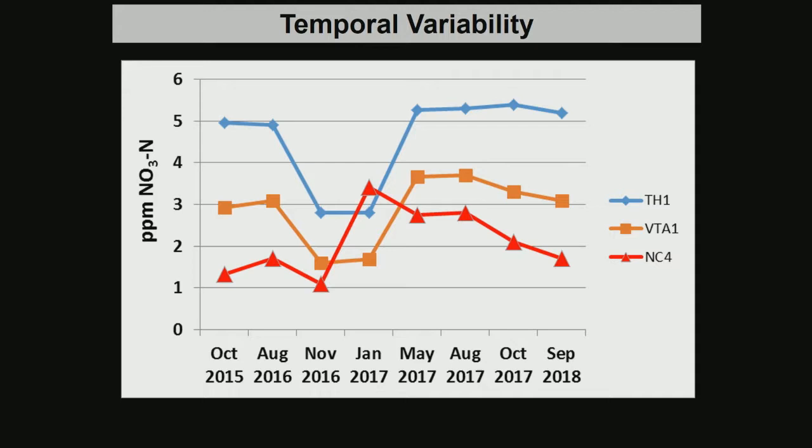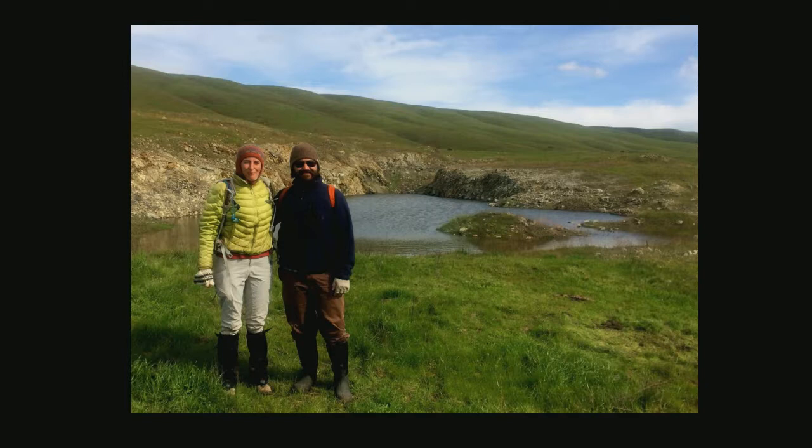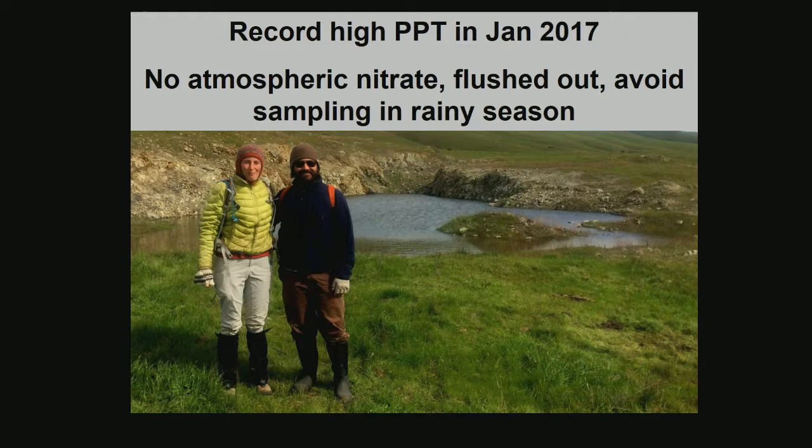After a very wet month, an old mine pit filled up with water — there's a lot of water in the groundwater system and we know exactly where the water table is. We found there was no atmospheric nitrate in this; it had been flushed out. We also decided we needed to avoid sampling in the rainy season because it was simply too variable.